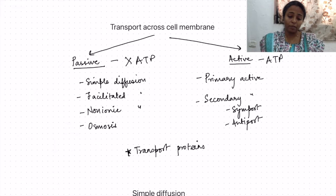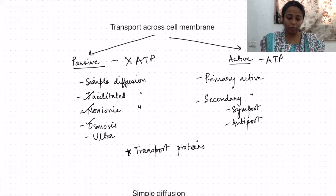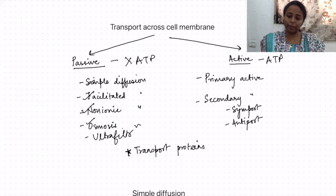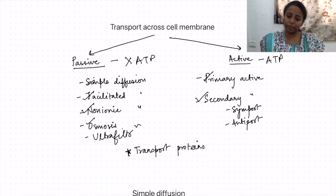In passive transport we have simple diffusion, facilitated diffusion, non-ionic diffusion, osmosis, and ultrafiltration. In active transport we have primary active transport and secondary active transport. Secondary active transport further has two mechanisms: symport and antiport.